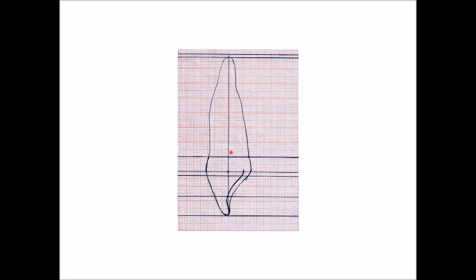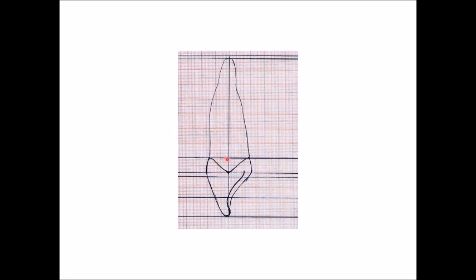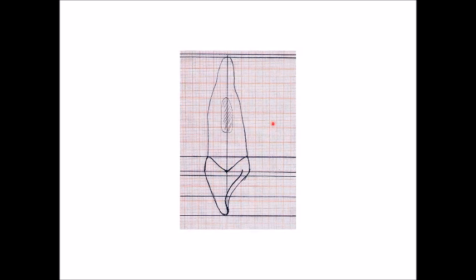Then I draw the cervical line according to measurement. The mesial curvature of the cervical line is 2.5 mm divided by 4, giving 10 mm. I mark the position, then draw the lingual and labial sides with a curved cervical line. There is also a depression in the middle area of the root — called a developmental depression — seen on the mesial side and the distal side of the root. The distal developmental depression is deeper than the mesial side.